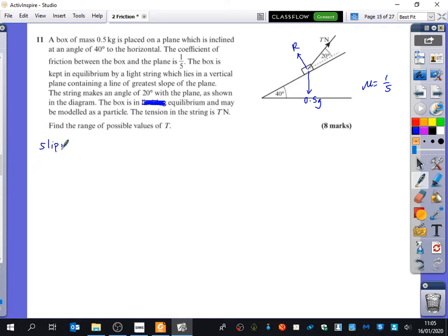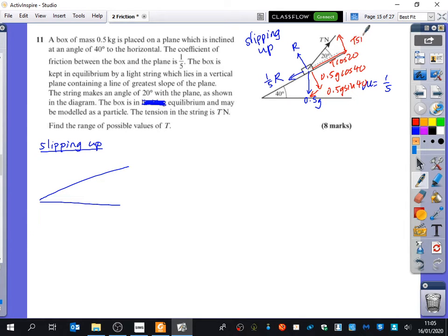So we can start off by just thinking about it on the slipping up the plane. So we've already got our diagram actually. Why don't I just use this one as our slipping up? So if it's slipping up, we're going to have friction going down the plane like this. And we're just going to resolve the forces. So we get this splits into 0.5g cos 40 and 0.5g sin 40 down the plane. And that's still going to split into your t cos 20 and your t sin 20 as usual. Same old things as we have before. So I'm just going to do my simplified diagram.